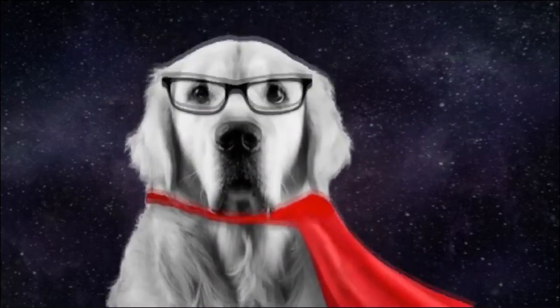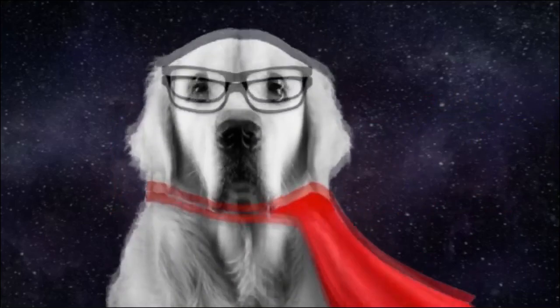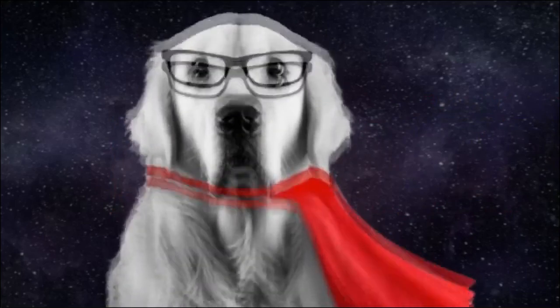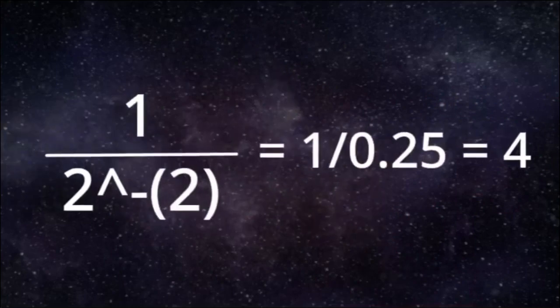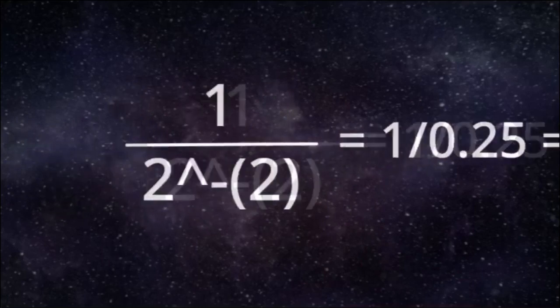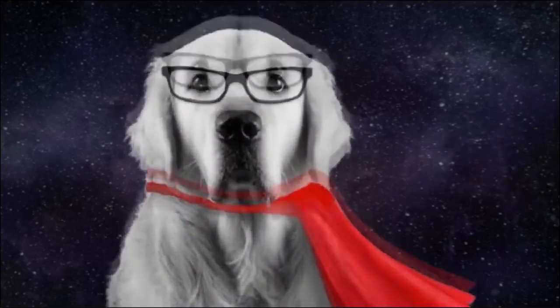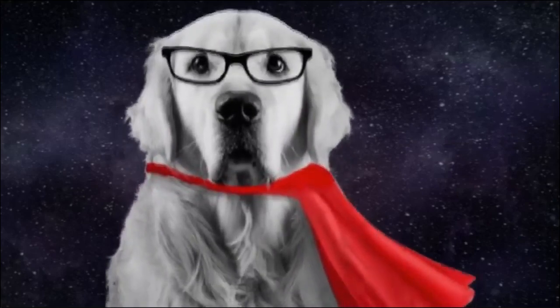Here is an example of a 4/4 time signature. The first byte is the numerator, and the second byte is the denominator. The denominator is encoded differently — it is the reciprocal of the negative power of 2. So 2 to the negative second power is 0.25, and the reciprocal of 0.25 is 4. The next 2 bytes tell you the number of MIDI clocks per quarter note, and it is always 18, or 24 in decimal. The final 2 bytes are the number of 32nd notes in a quarter note, and it is normally 8.